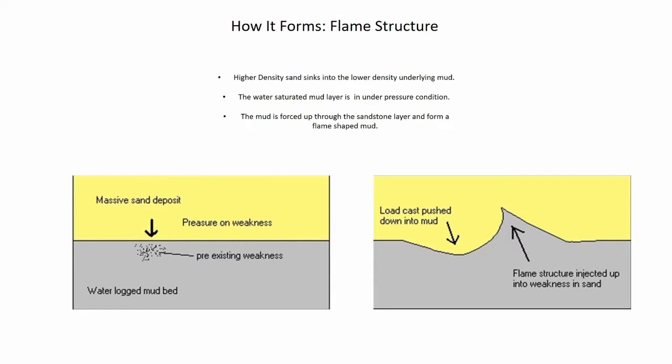As you can see from the image, the yellow region is the overlaying bed, which is the sandstone layer, and the gray region is the water-saturated mud layer, which is the underlying bed.